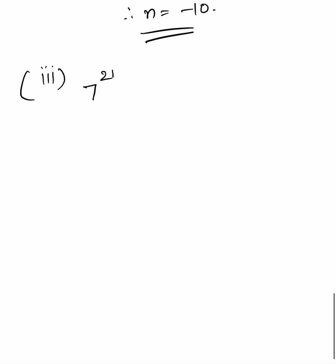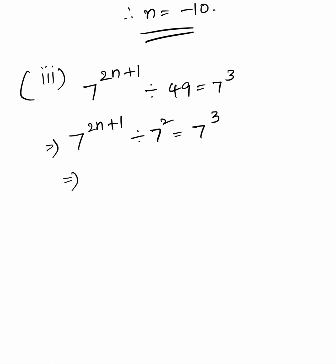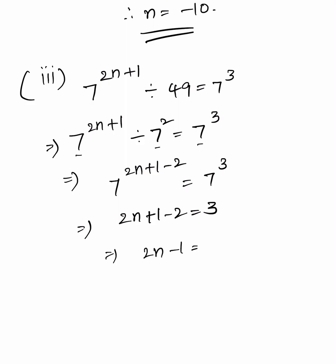Third part: 7 to the power 2n plus 1, divided by 49, equals 7 cube. We write 49 as 7 square. So 7 to the power 2n plus 1, divided by 7 square, equals 7 cube. Since the bases are equal, equating the exponents: 2n plus 1 minus 2 equals 3, so 2n minus 1 equals 3, therefore 2n equals 4, so n equals 2.